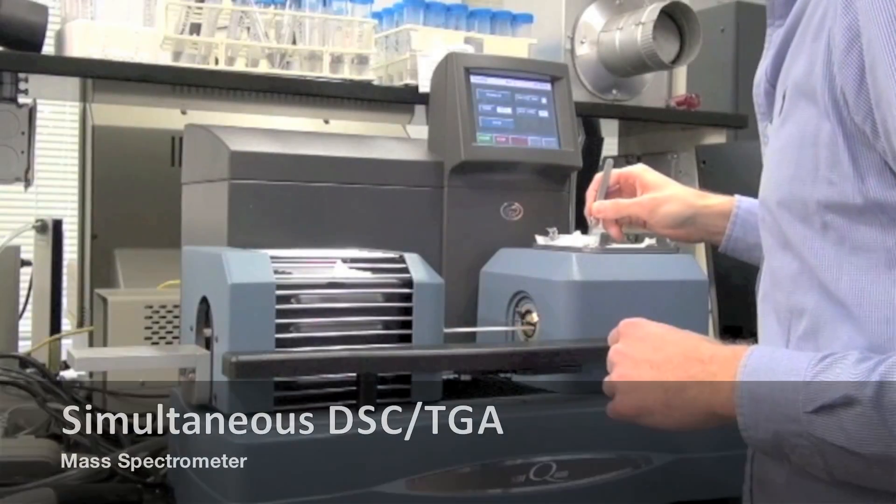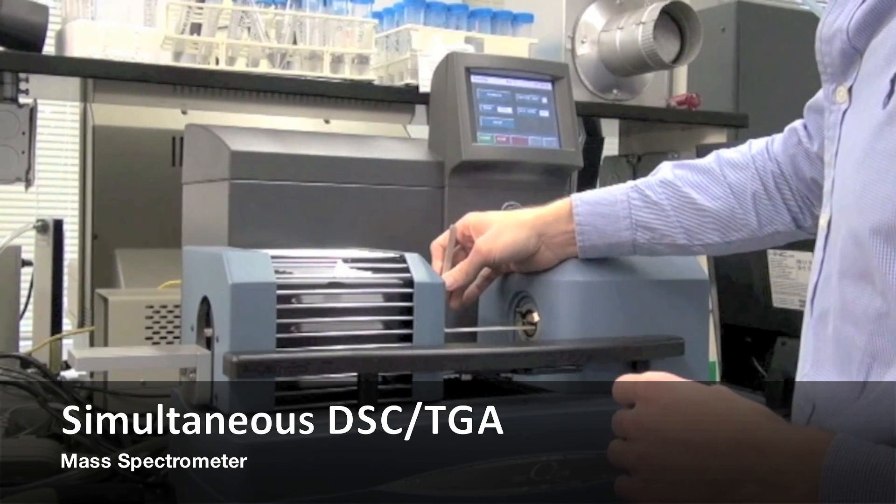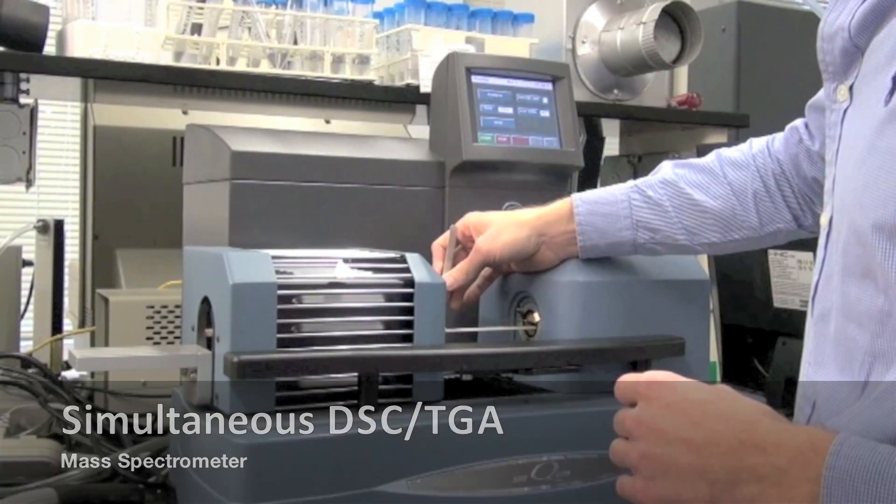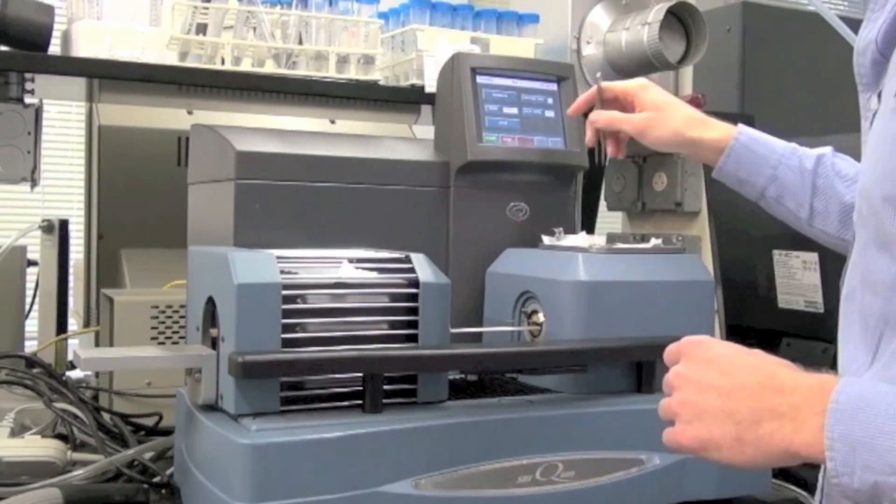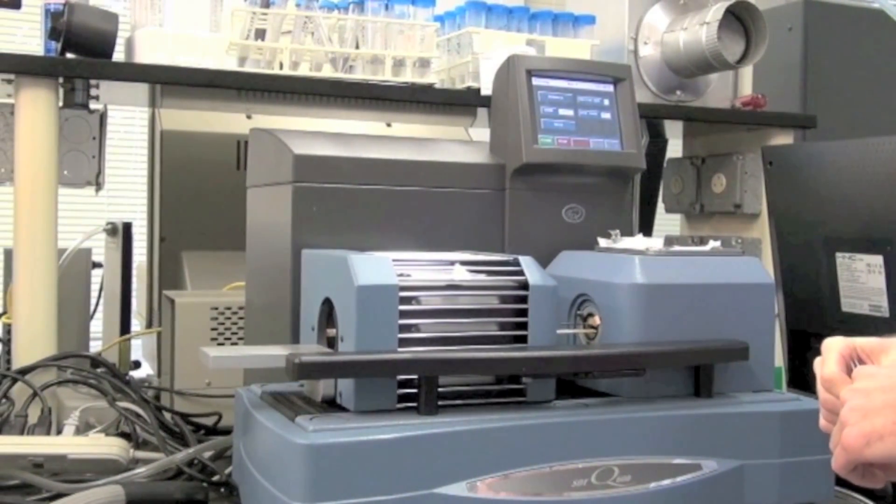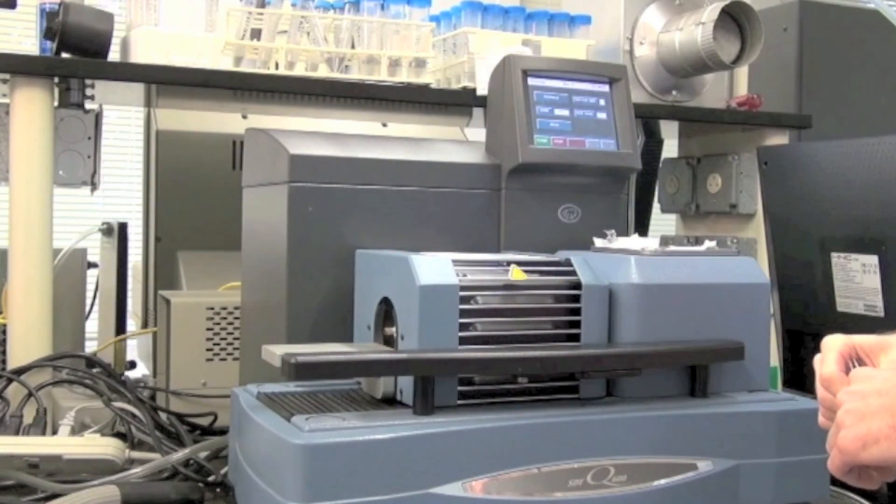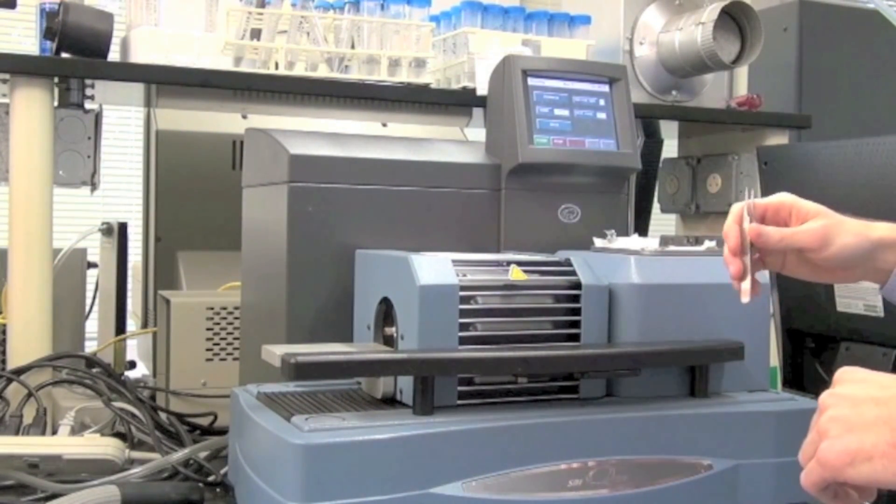we have a simultaneous DSC TGA mass spec. That allows us to link the chemical functional group properties to the mechanical characteristics of these natural organic matter, which then lets us understand the mechanisms of absorption, desorption, those kind of things.